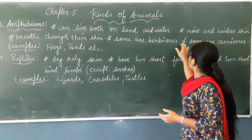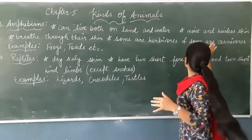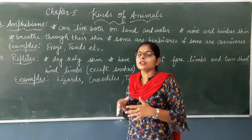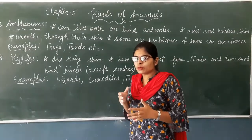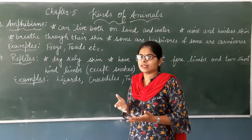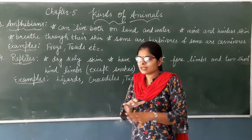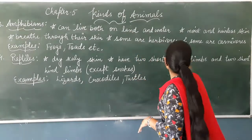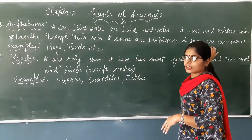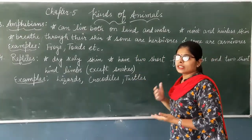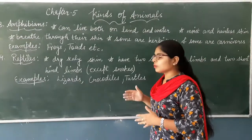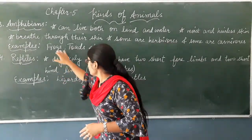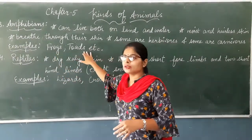Some amphibians are herbivores and some are carnivores. Herbivores only eat plants and do not eat the flesh of any animal, while carnivores eat the flesh of other animals and survive on them. Examples of amphibians are frogs and toads.